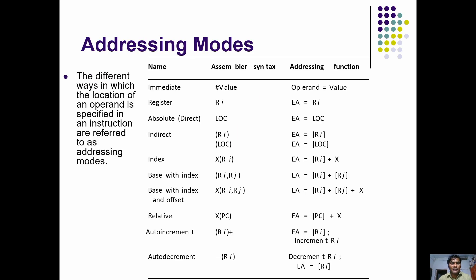Now we will see the types of addressing mode. The first column represents the name of the addressing mode, which represents the way. The second column represents the assembler syntax, and the third column represents the addressing function.